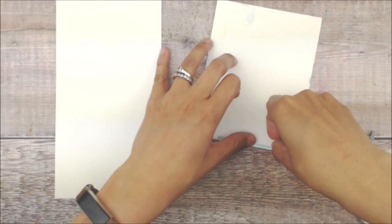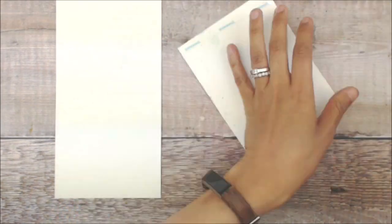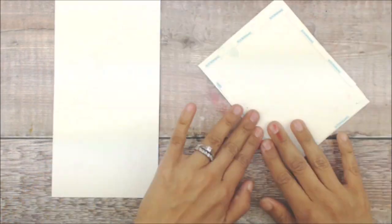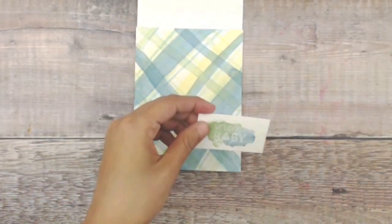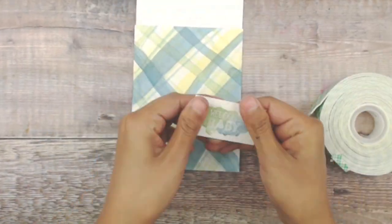Once we're done with watercoloring your sentiments we're going to be using some score tape. The reason why is this cardstock is really thick and I don't think regular adhesive would be able to hold down onto our card base.